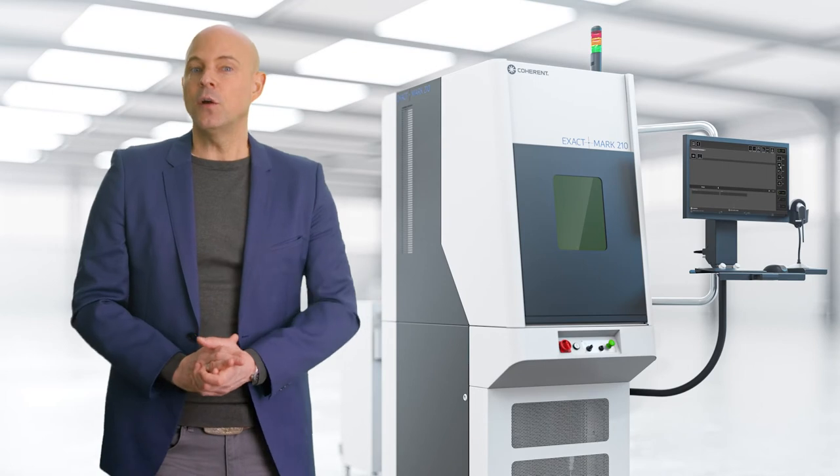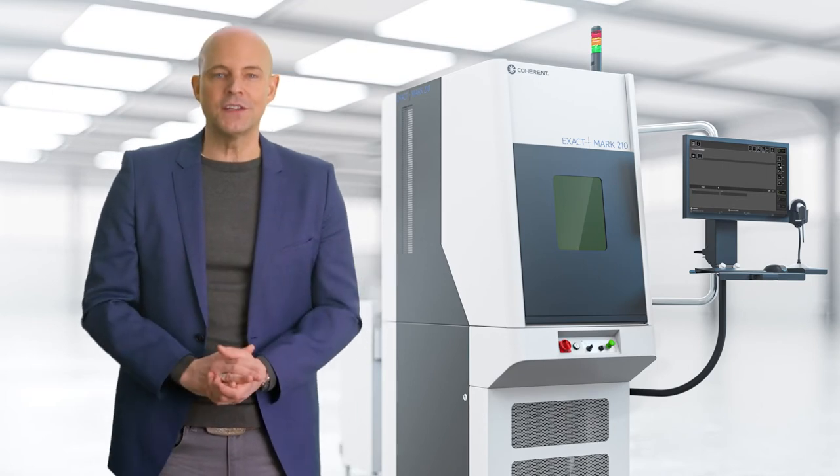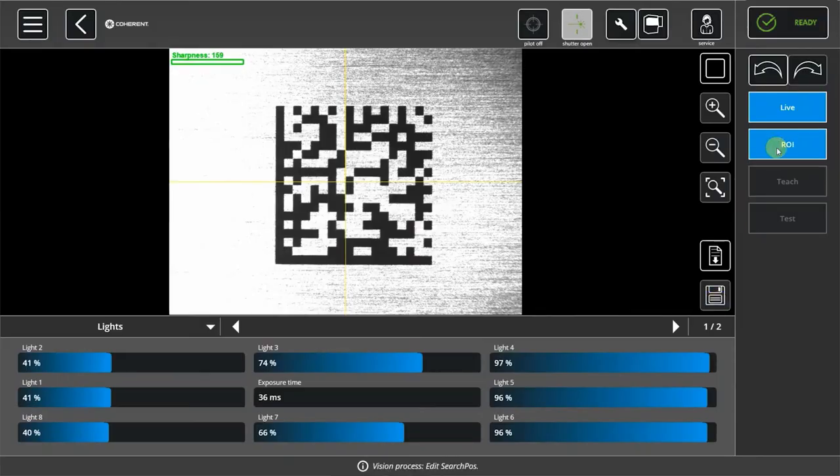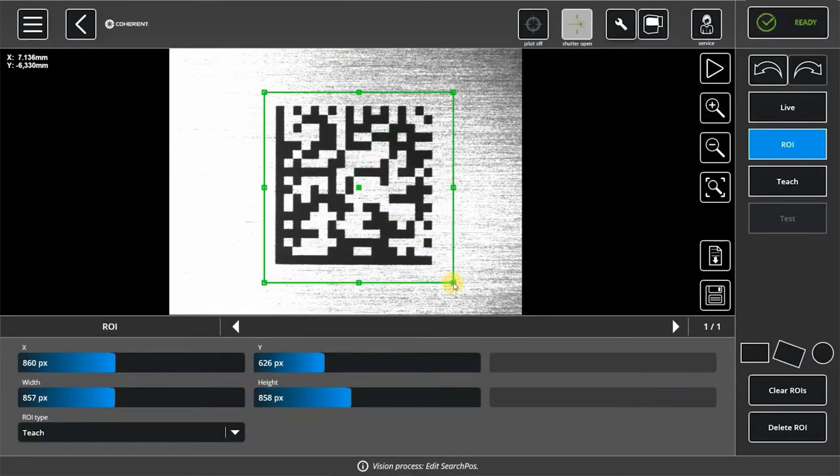Vision tasks can also be used after the laser process to check and document the quality of the operation just performed. Again, you simply add the vision task you want to perform to your job timeline, pick the region of interest and teach the system.